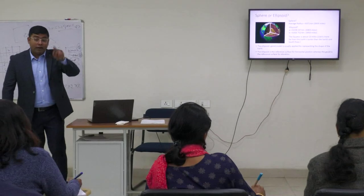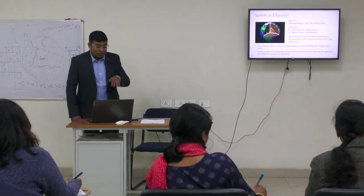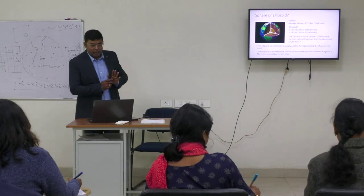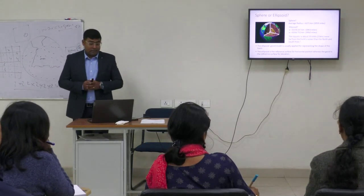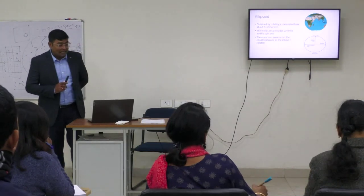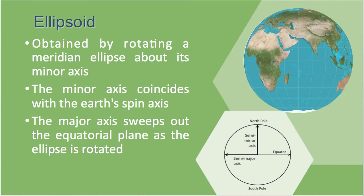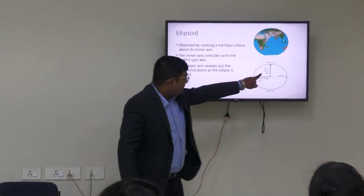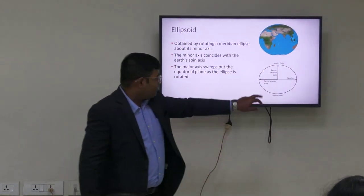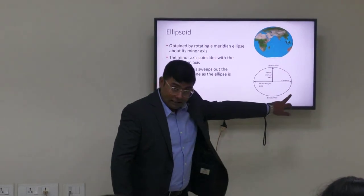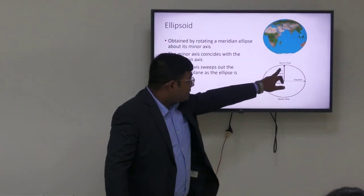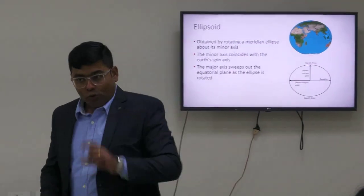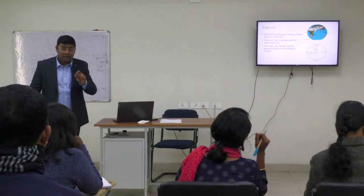The geoid is considered for vertical measurements — that means precise altitude measurements. In case of the ellipsoid, it is obtained by rotating a meridian ellipse about its minor axis. The minor axis coincides with the Earth's spin axis. The equatorial radius is known as the semi-major axis, and the polar one is the semi-minor axis.